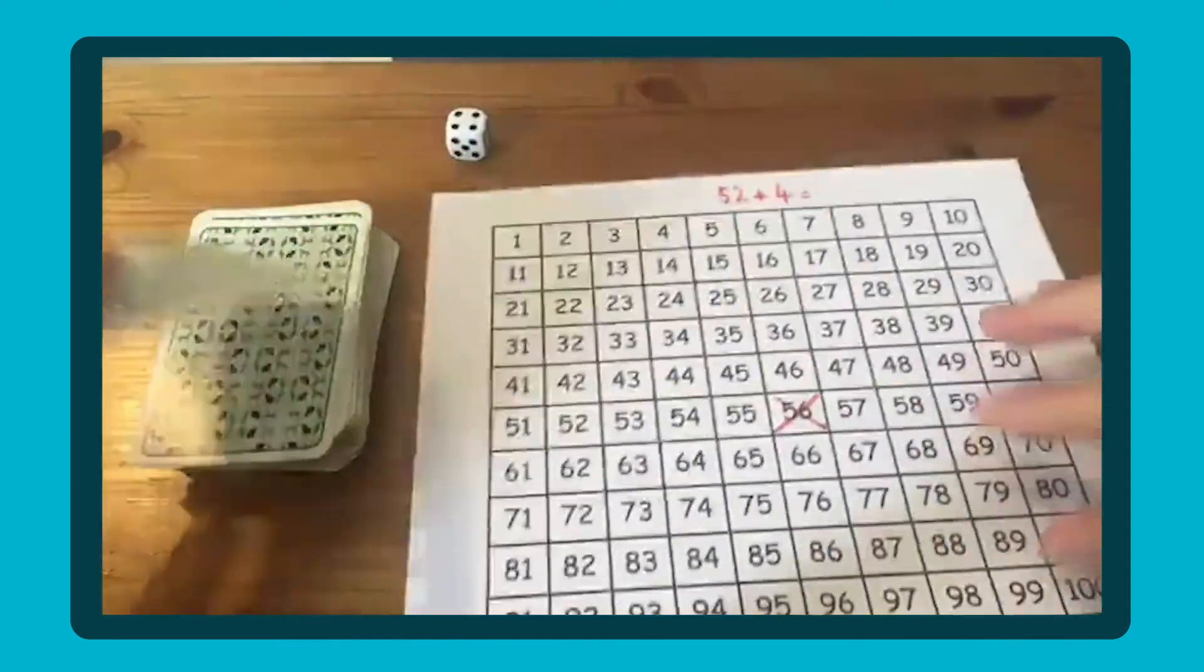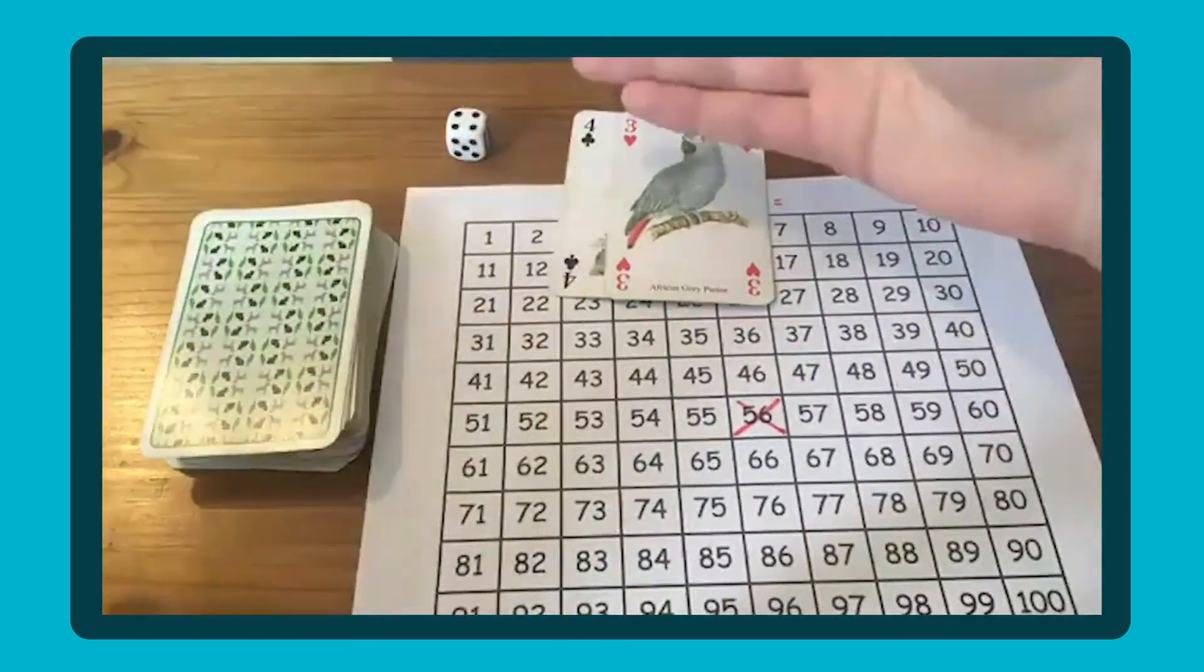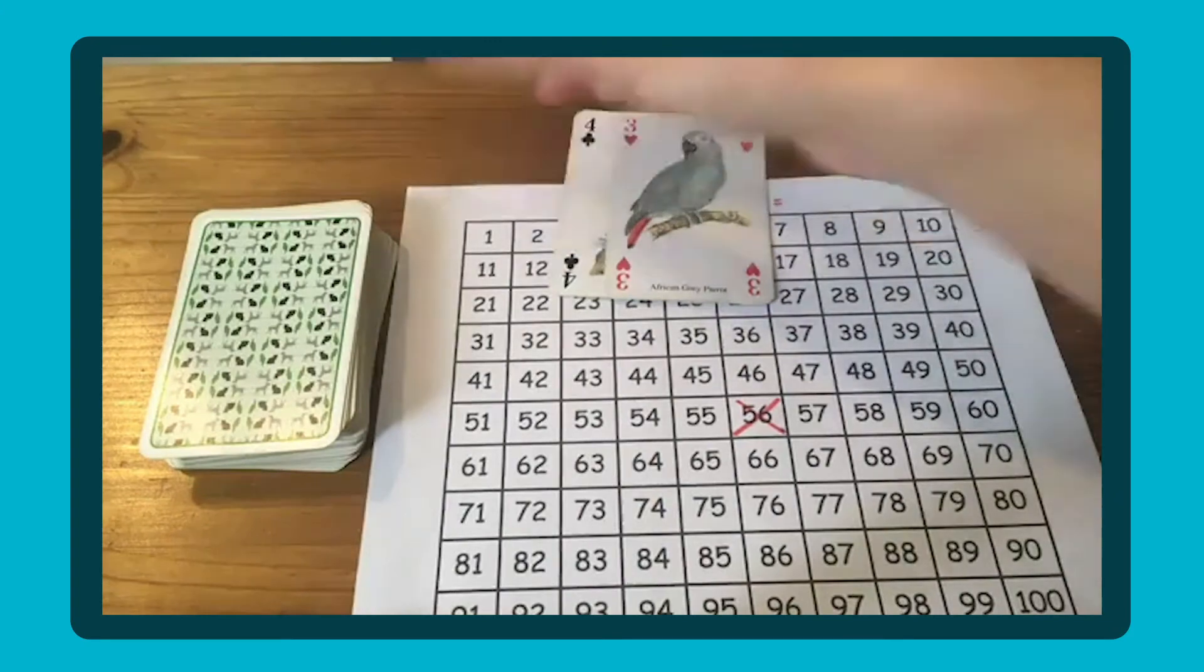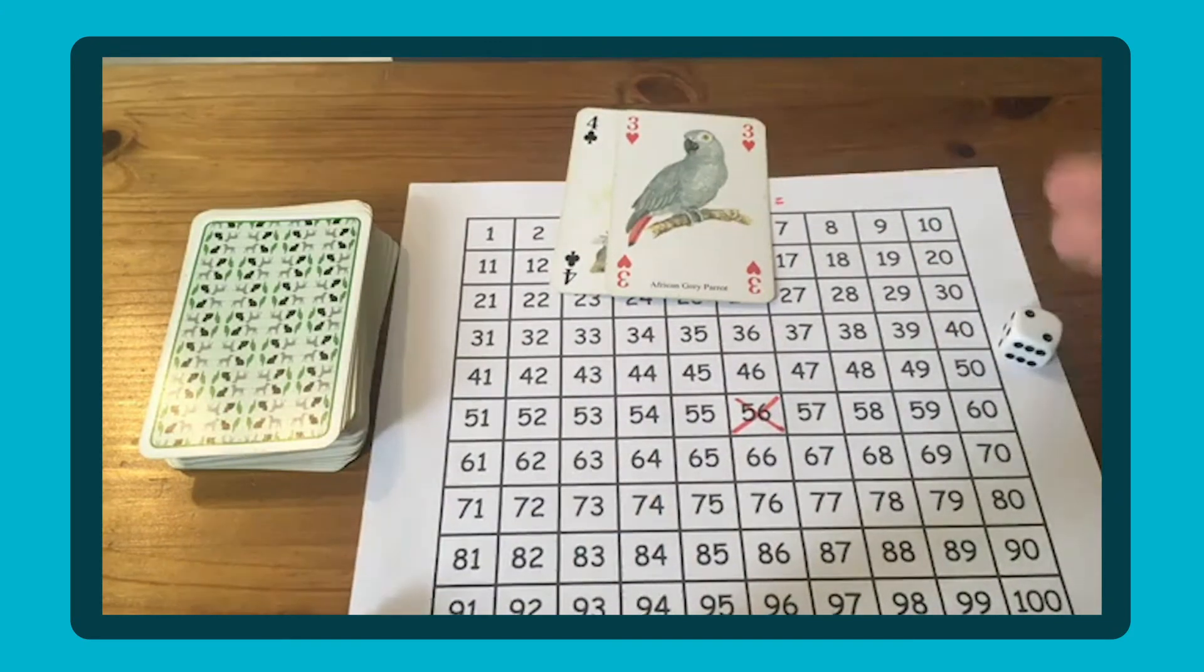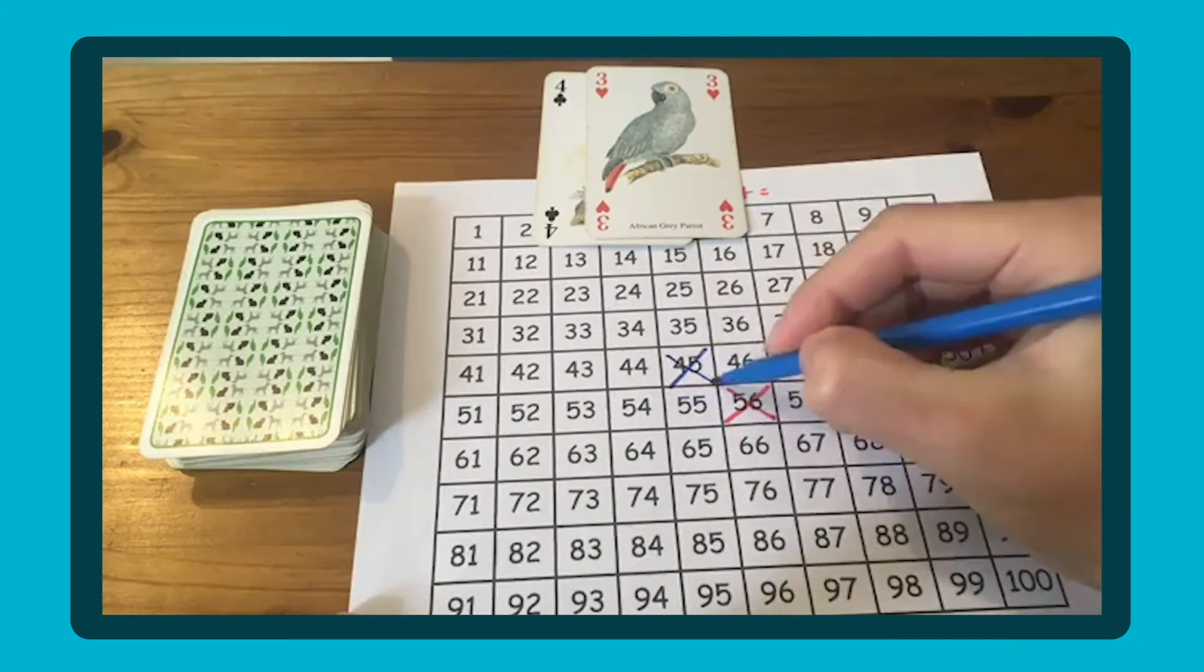Then it'd be player two's go. Player two would turn over two cards to generate a two-digit number. Again, it could be one digit. They've got 43. They roll and get a two. Count on to 44, 45. Player two would be crossing 45.